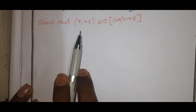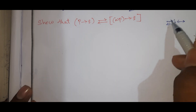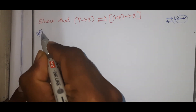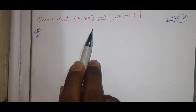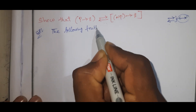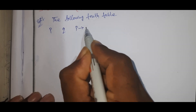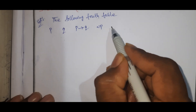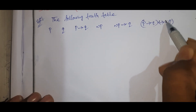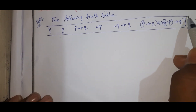The next problem: show that P conditional Q is biconditional with negation P conditional Q. We need to verify if they are equivalent. The solution uses a truth table. There are only two propositions, so we have four statements.